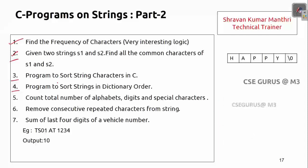For the third question, we are given a string — let's say str — and the index starts with zero, ending with the null character as every string in C does. The output should be sorted according to ASCII values: so for 'happy', a comes first, then h, then p, then p, then y.